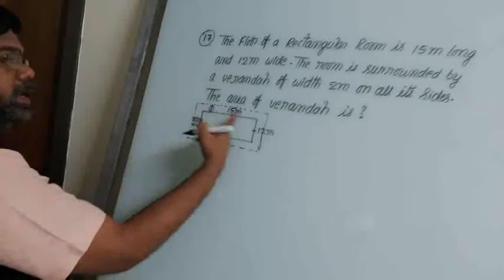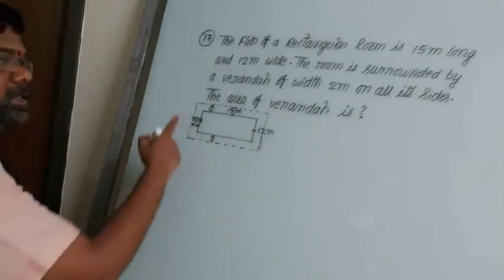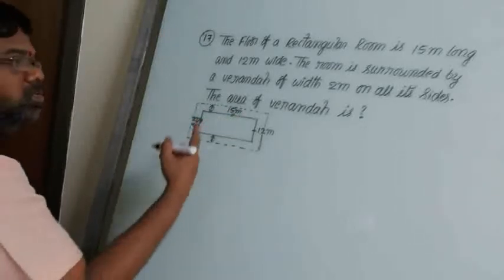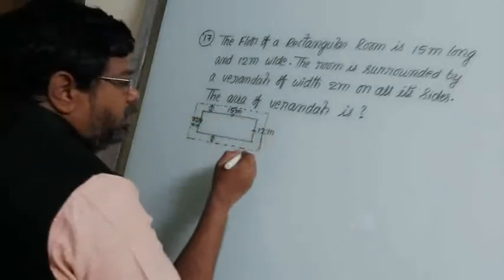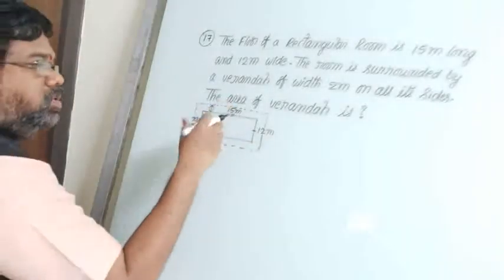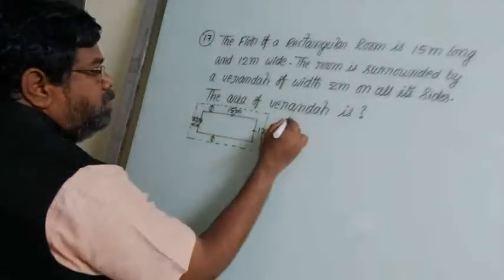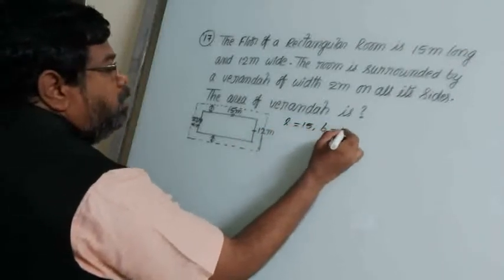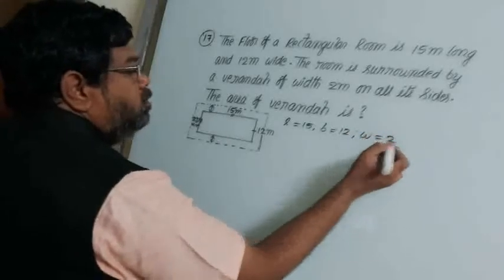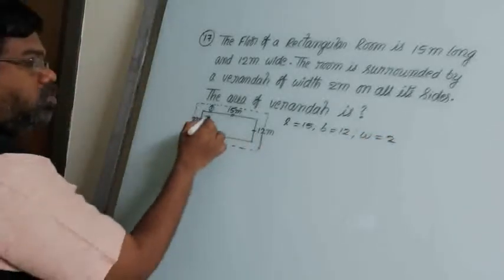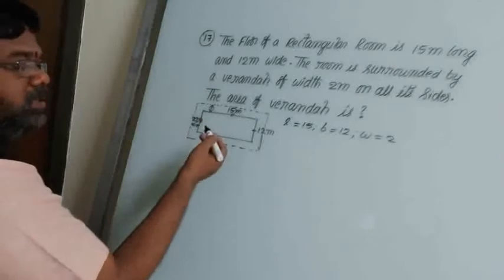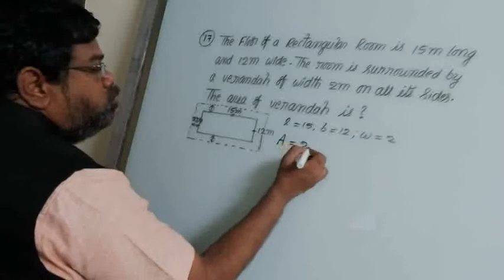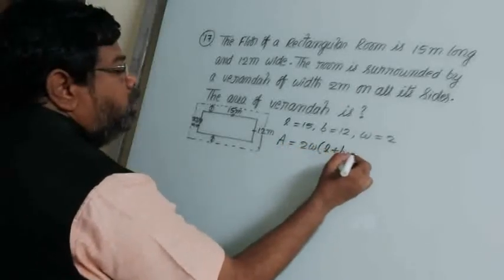This veranda area is essentially an outside path area. You have to calculate the rectangular field outside path area and apply the formula. When L is 15, B is 12, and width W is 2 meters, the formula is: Area = 2W × (L + B + 2W).